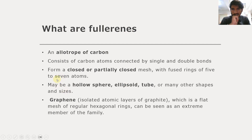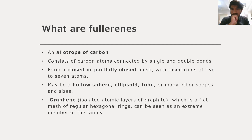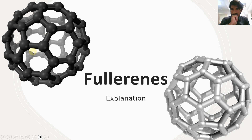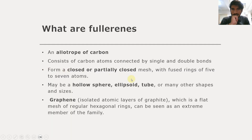What are the different types and shapes of fullerene? They can be hollow — in the form of a hollow sphere, as shown earlier — or they may be in the form of an ellipsoid, a tube, or many other shapes and sizes.